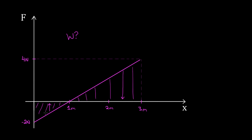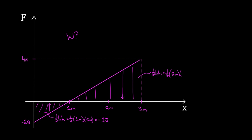Both sections are triangles. For the first portion: one half base times height — one half times one meter times negative two Newtons equals negative one joule. That just means I did negative work on the hamburger during that portion. For the second portion: one half times two meters times four Newtons equals positive four joules. The total work done over the entire three meters is four joules minus one joule, which is positive three joules.